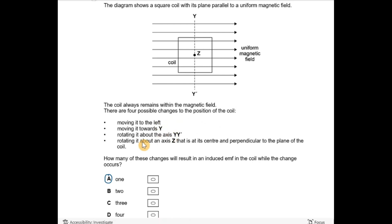There are four possible changes to the position of the coil: moving it left, moving it towards Y, rotating it about Y, and rotating it about Z. How many of these changes will result in an induced EMF in the coil while the change occurs?